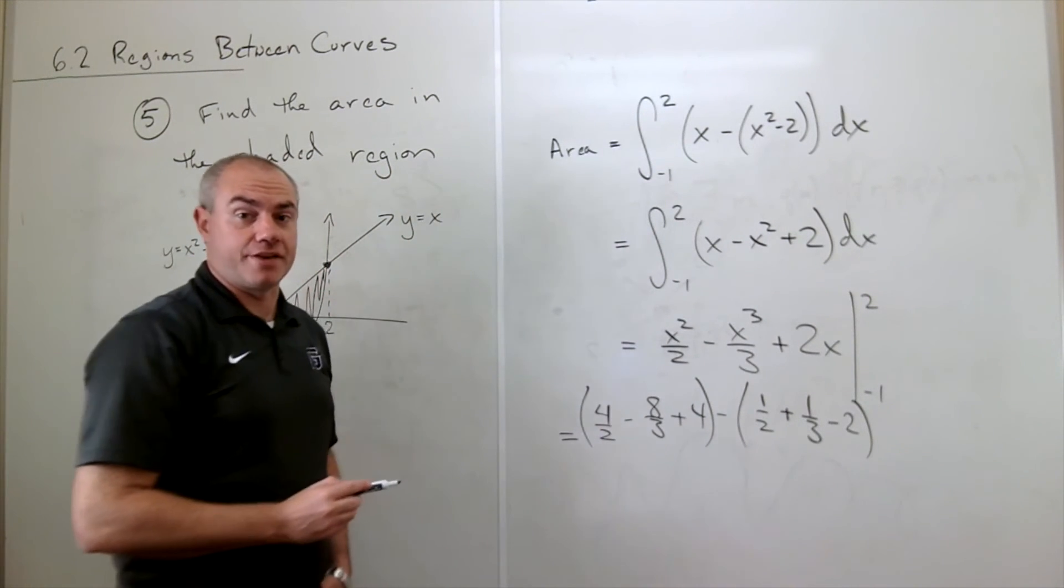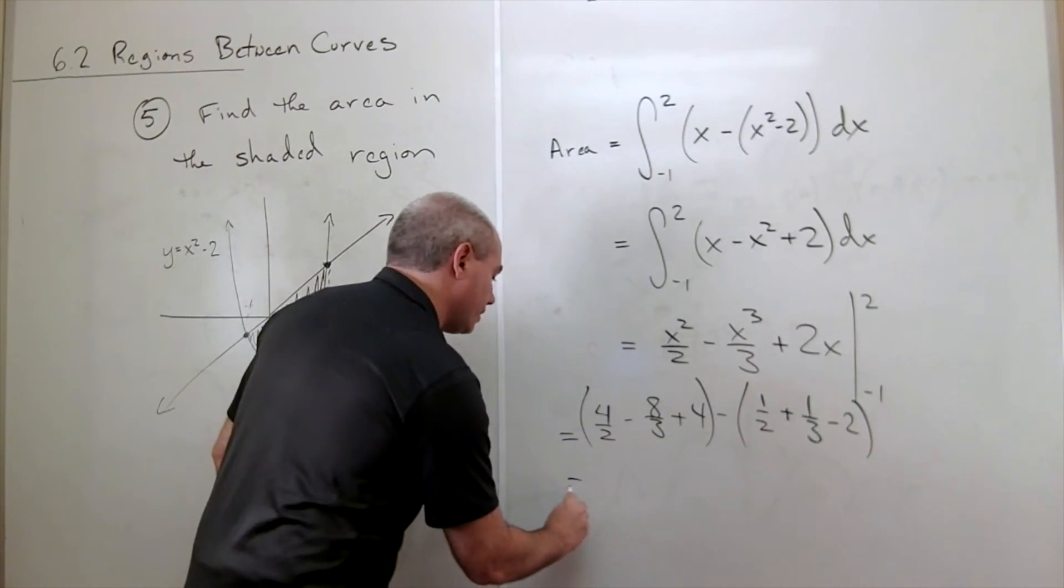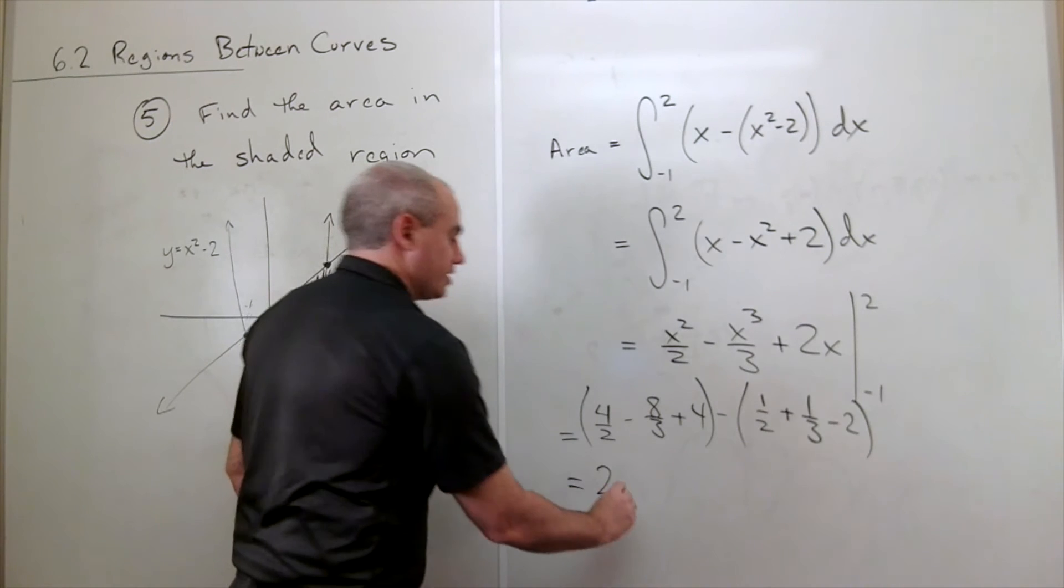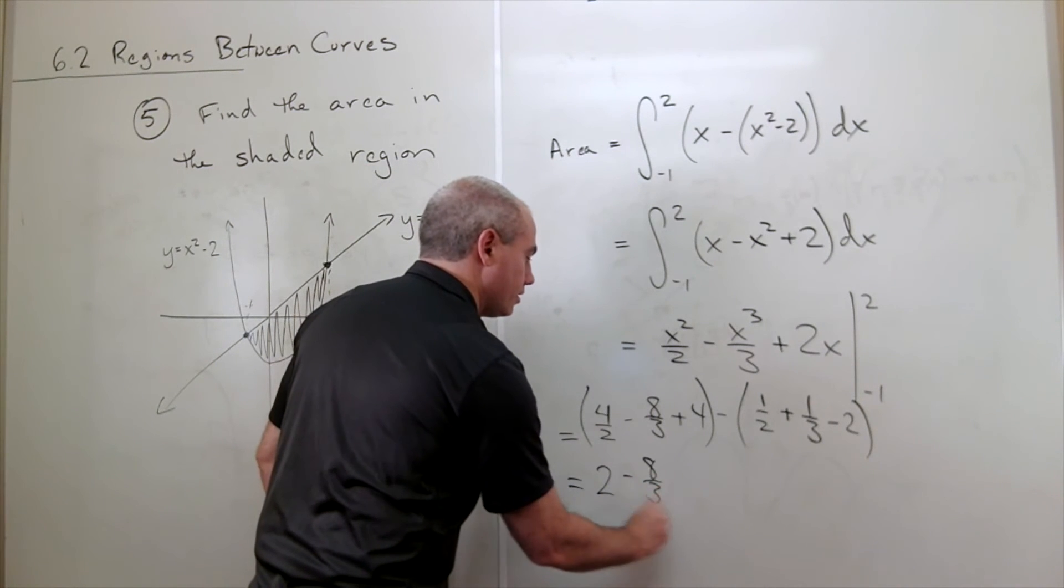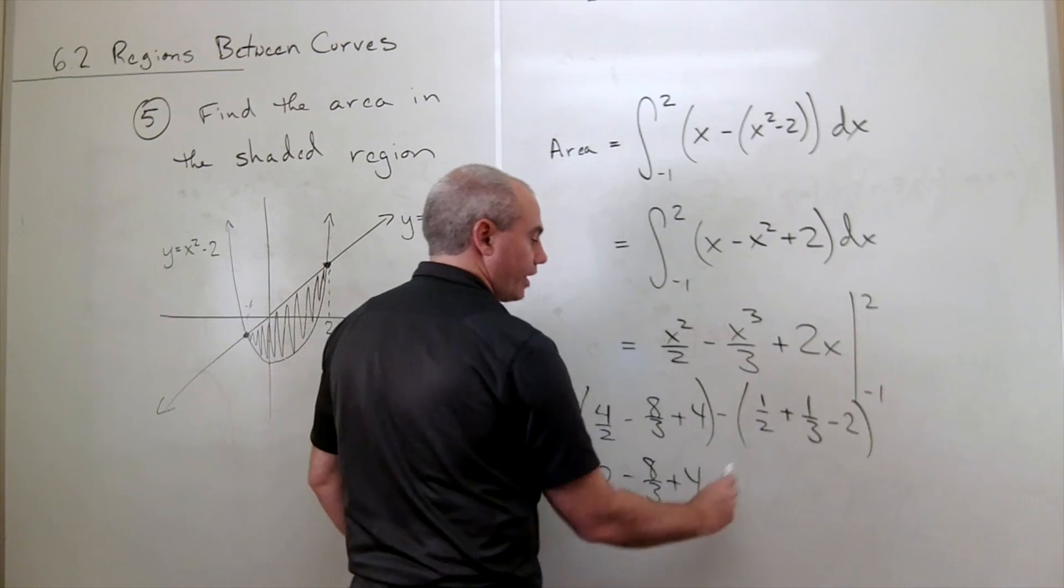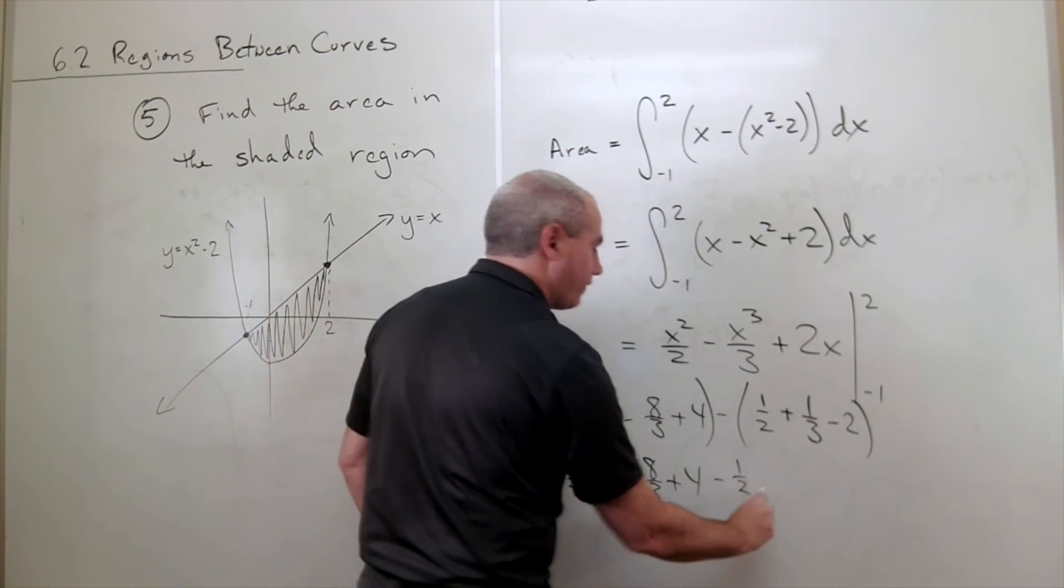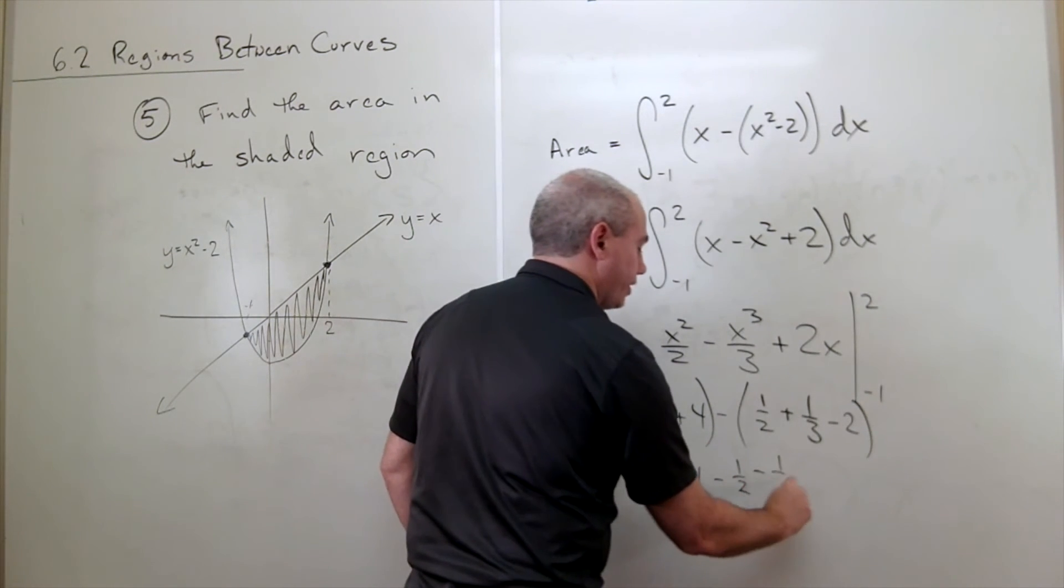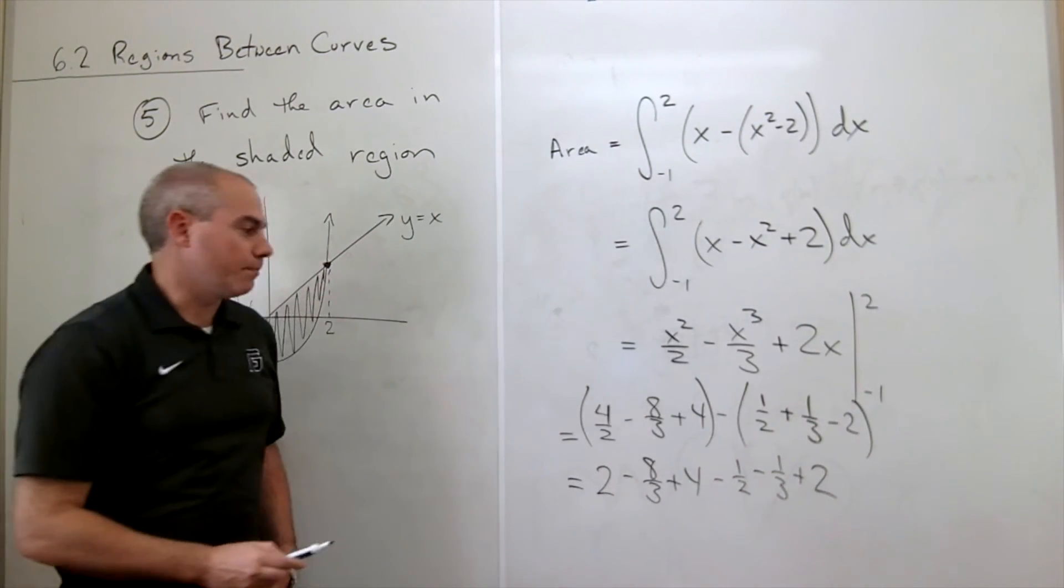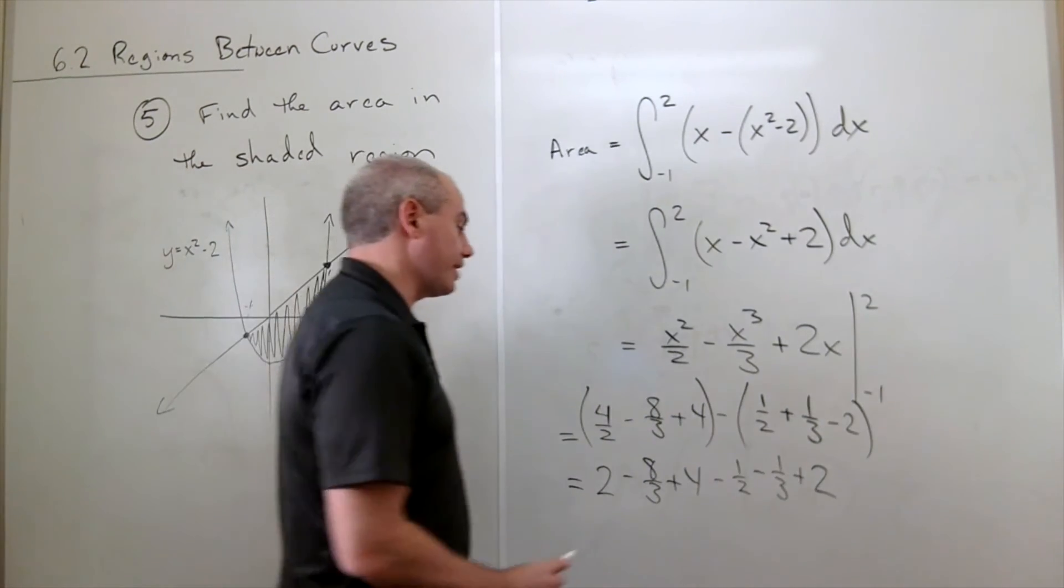All right, so let's put all of that together. This is just a two. This is a minus eight-thirds, plus four. I'll distribute this negative through and I get minus one-half, minus one-third, plus two. Now let's combine everything together and get our answer.